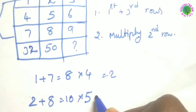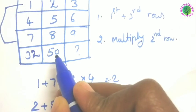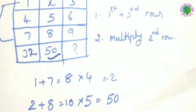So 8 into 5, so 10 into 5, 50. So this is the applying logic is correct.